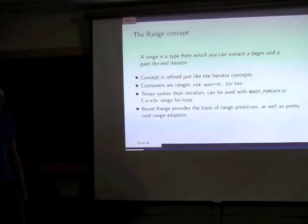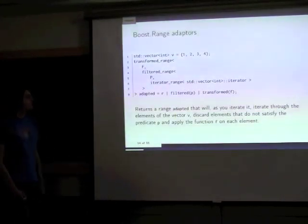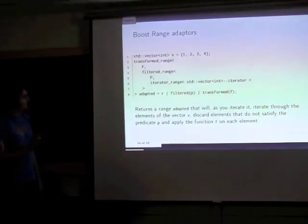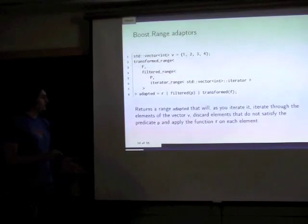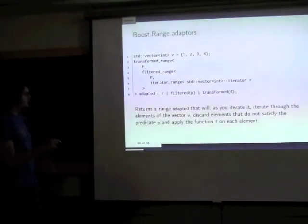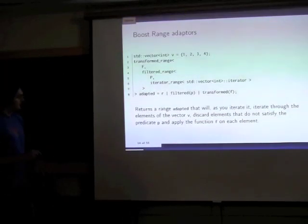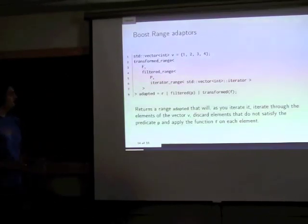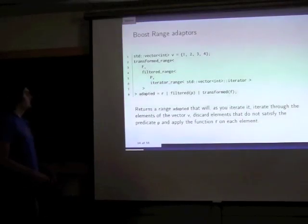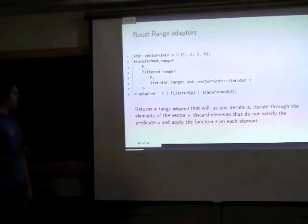Boost range adapters look like this: as input you've got a vector which is a range, and you build a new range filtered by predicate p and transformed by f. As you iterate, elements not satisfying p are removed, then f is applied on the result. This gives us a mechanism for lazy evaluation of transformations on ranges. Unfortunately, transform is only element-wise — it can't handle transformations that produce multiple outputs per input element.